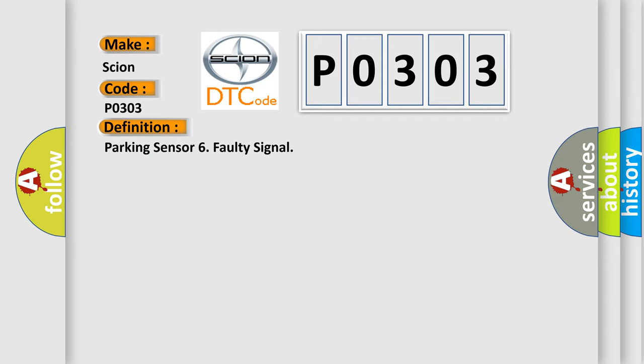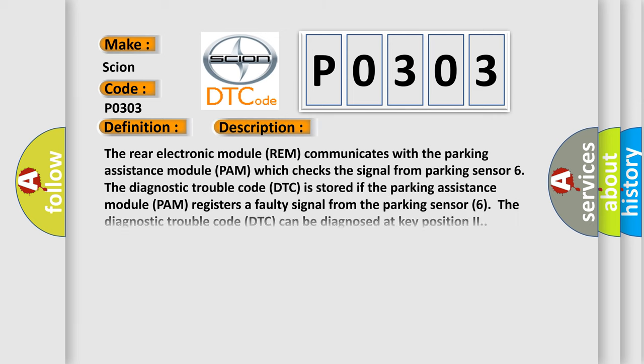And now this is a short description of this DTC code. The rear electronic module (REM) communicates with the parking assistance module (PAM) which checks the signal from parking sensor 6. The diagnostic trouble code (DTC) is stored if the parking assistance module (PAM) registers a faulty signal from parking sensor 6. The diagnostic trouble code (DTC) can be diagnosed at key position 2.